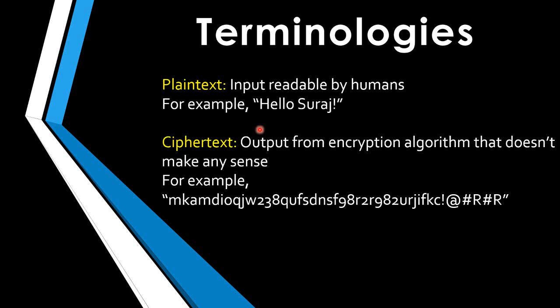Now we'll see some of the basic terminologies in cryptography. We'll start with the basics of what exactly is input and what exactly is output to all this process discussed in the previous video. Plain text is simply input that can be read by humans — for example, simple data such as 'hello world', any data that you want to encrypt and prevent an intruder or attacker from accessing.